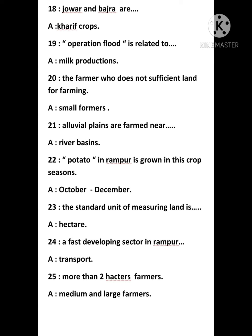Eighteenth question: jowar and bajra are — answer is kharif crops. Nineteenth question: Operation Flood is related to — answer is milk production. Twentieth question: the farmer who does not have sufficient land for farming — answer is small farmers.